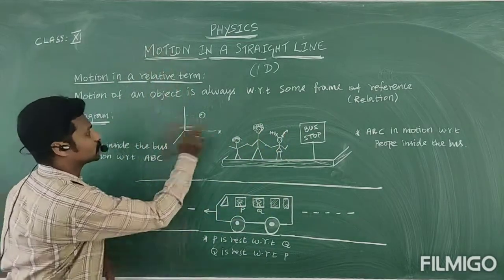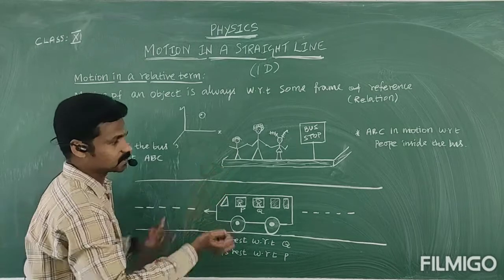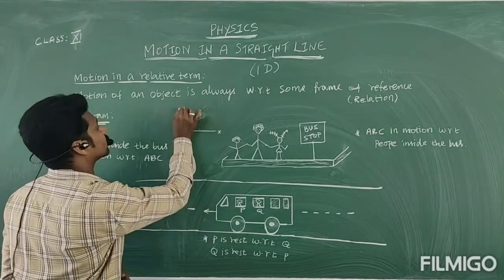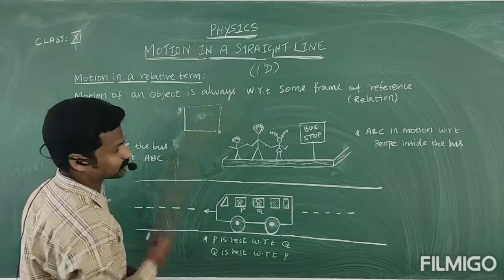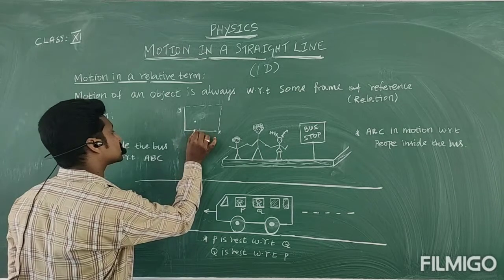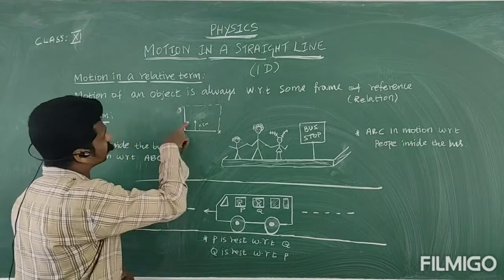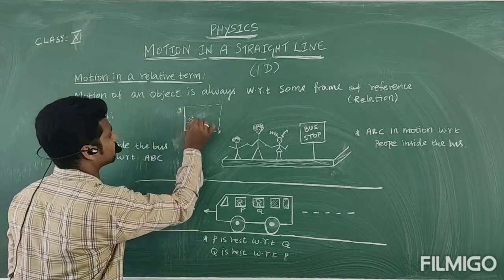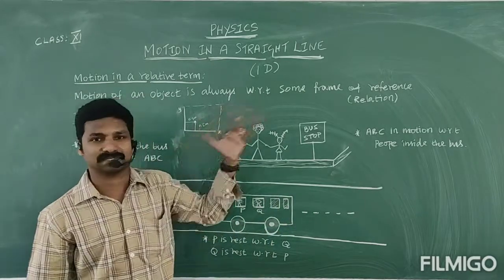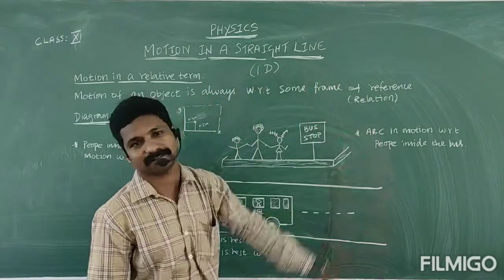It is a board — two-dimensional or three-dimensional — with x-axis and y-axis. One object is placed here at a certain distance from the x-axis. We have to refer its position from something. So the definition is: motion of an object is always with respect to some frame of reference.